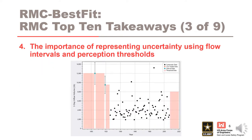Number four is the importance of representing uncertainty appropriately using flow intervals and perception thresholds.